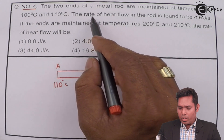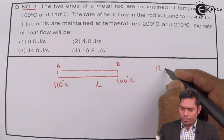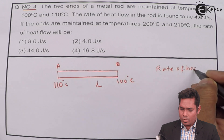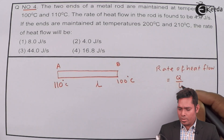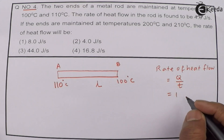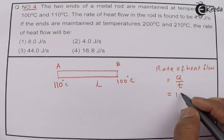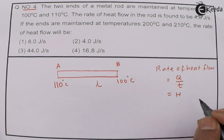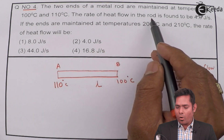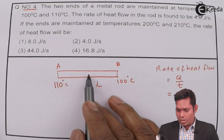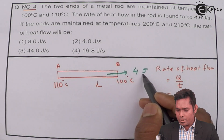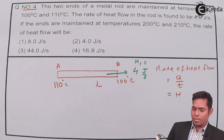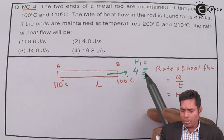In this situation, the rate of heat flow — that is, the quantity of heat flowing per second — I will call this H. The rate of heat flow in the rod is found to be 4 joules per second. So the rate of flow of heat is given by 4 joules per second; that is my H1. H1 is the amount of heat flowing out per second.